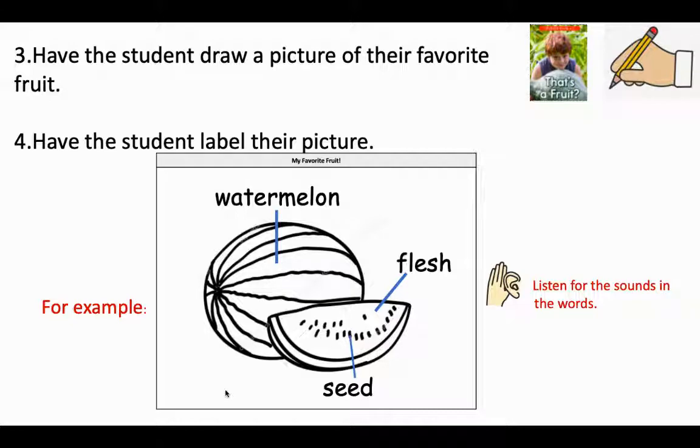Your kindergartner might hear the sound sss. Seed. Then they have to think, what letter makes that sound? The S makes that sound. So, they may write the S as their label. That's okay.